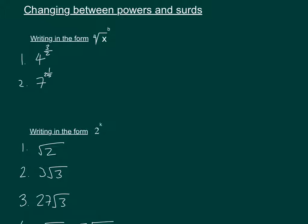So let's look at the first one. We have 4, that's going to be inside of our square root. We've got 2 on the bottom, so that's the square root, and the 3's on the top, so that's our power. That's all we need to do for that one.